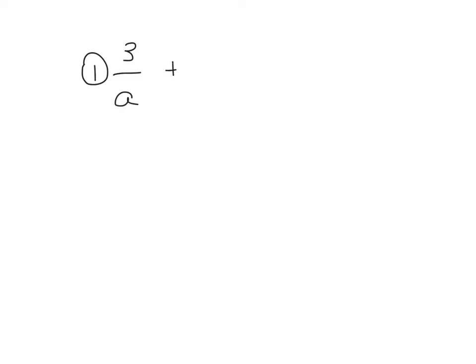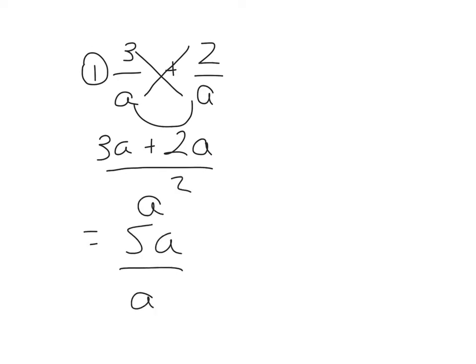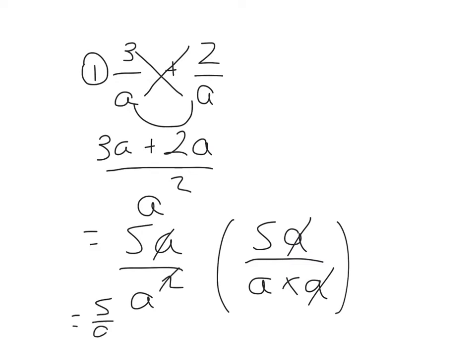3 over a plus 2 over a. We're going to use the kiss and smile method. So start with 3, 3 times a plus 2 times a over a times a. So 3a plus 2a over a times a, which is a squared. And that will be 5a over a squared. Now if you think about it, a squared is a times a, so that a cancels with that one. And the final answer is 5 over a.